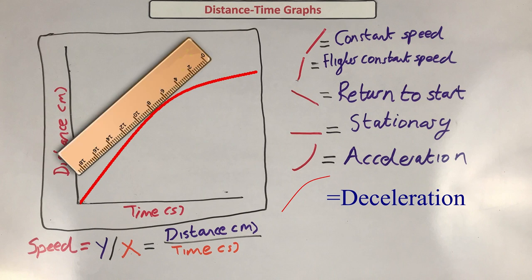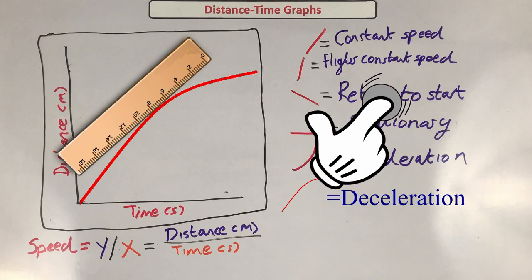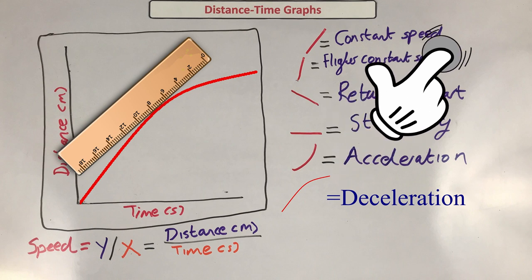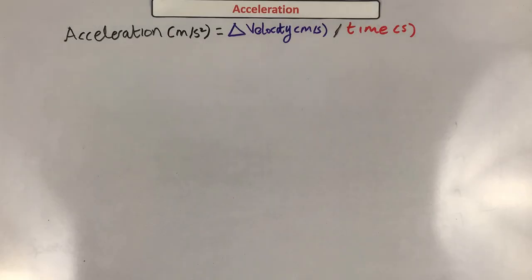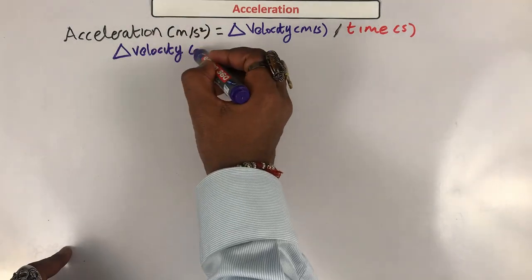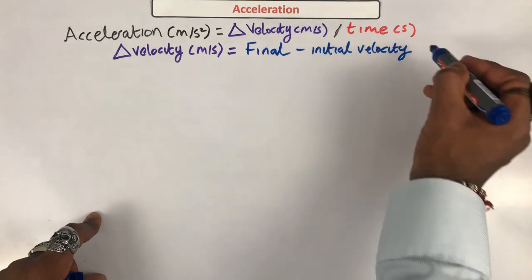When you have a curve you will need to draw a tangent to find the speed at that instant in time. Acceleration can be worked out from the equation: acceleration in meters per second squared equals delta velocity in meters per second divided by time taken in seconds. That delta triangle means 'change,' so it's the change in velocity.